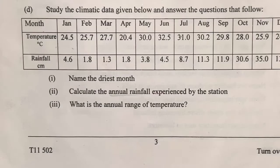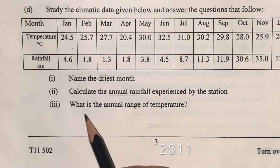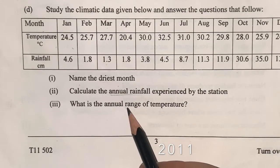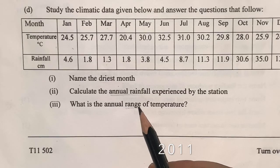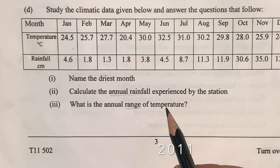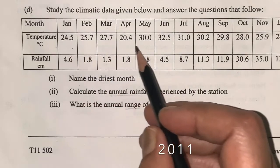The last question is to calculate the annual range of temperature. For this calculation, if the range term is there, we have to take two values, maximum and minimum value, and then we will subtract to get the answer.